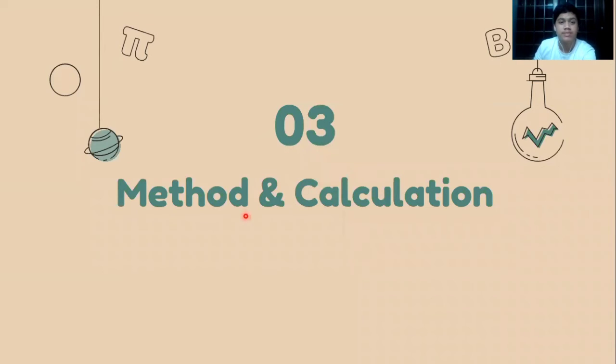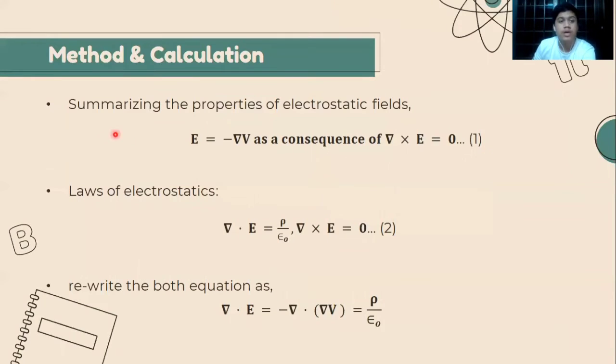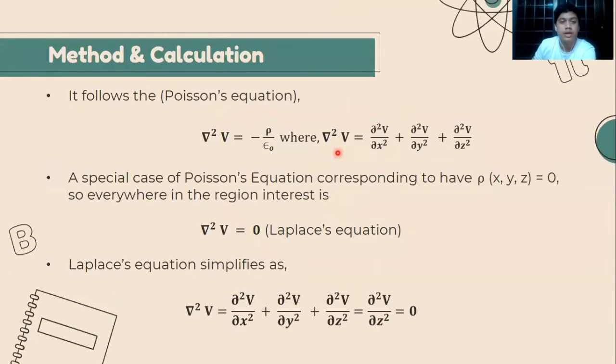We move to number three, method and calculation. By using the electrostatic field properties and laws of electrostatics, we can rewrite both equations as below. From the equation earlier, it follows the Poisson equation.